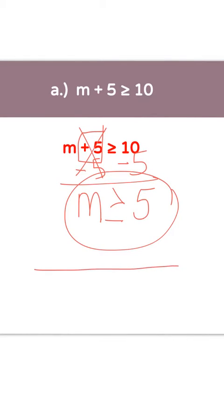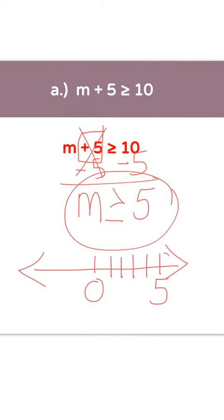Now to graph it. Draw your number line and place a circle at the 5. The sign is greater than or equal to — because it can equal 5, it is a closed circle. Since it is greater than, the arrow goes to the right. You should have a closed circle on the 5 with an arrow going to the right.